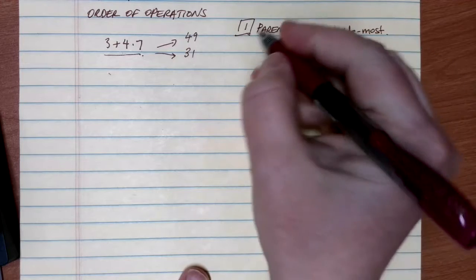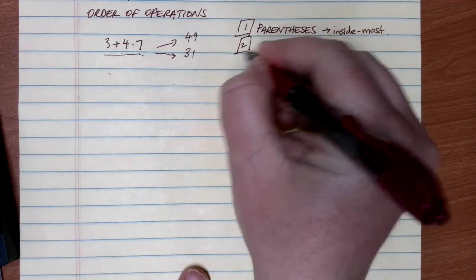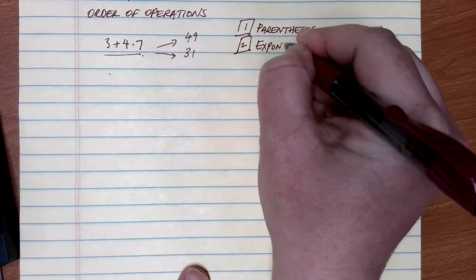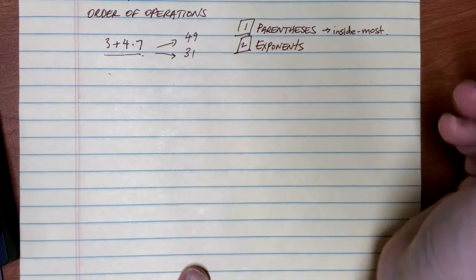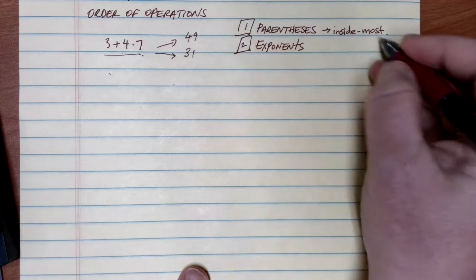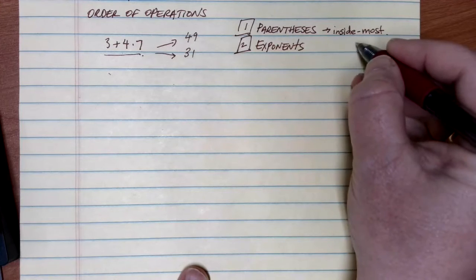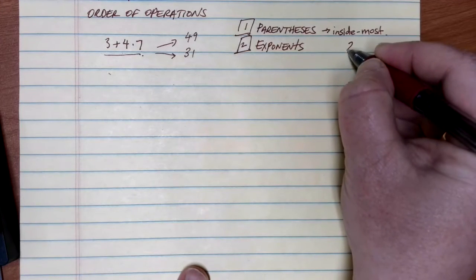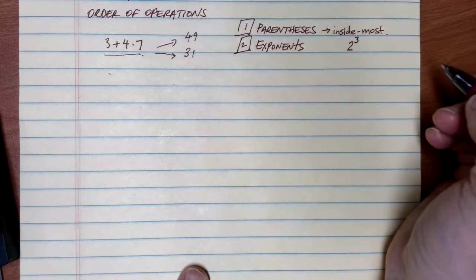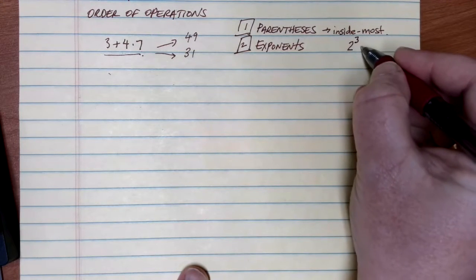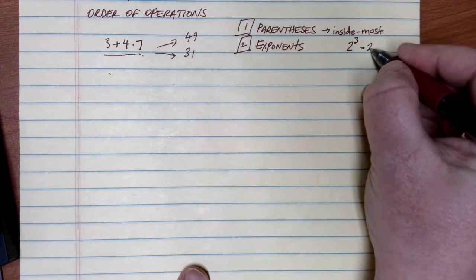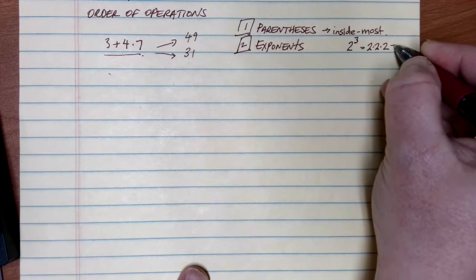Once you've taken care of all the parentheses, the next thing you want to do is concentrate on any exponents in the problem and take care of those next. Remember, exponents are where you have a number as a base and then a power above it — something like 2 to the 3rd power. Exponents are a way to do repeated multiplication: 2 to the 3rd power means 2 times 2 times 2.